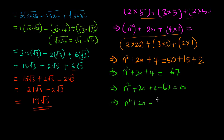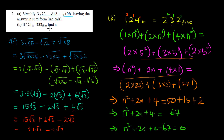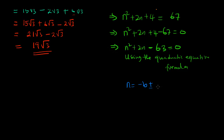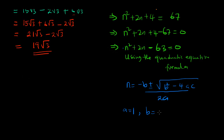Rearranging: n² plus 2n plus 4 minus 67 equals zero, which gives n² plus 2n minus 63 equals zero. We need to find the value of n, the base of 124. We'll use the quadratic equation formula, identifying a equals 1, b equals 2, and c equals minus 63.